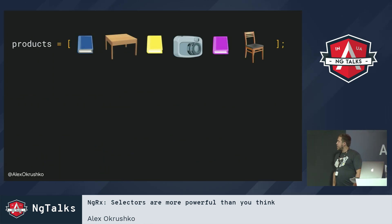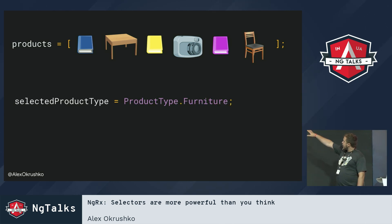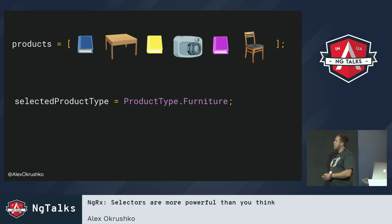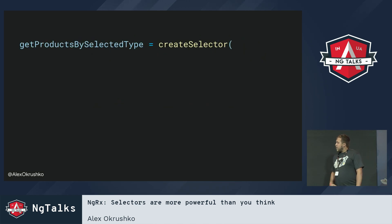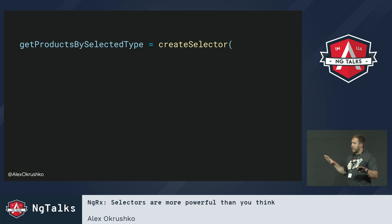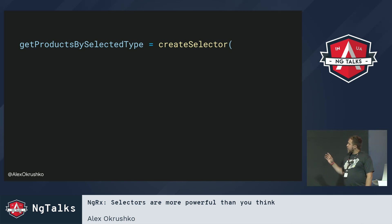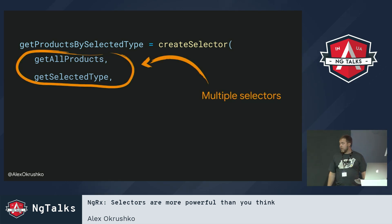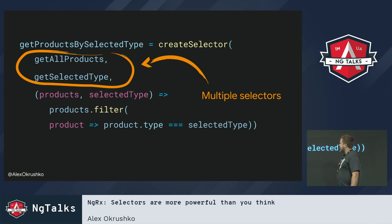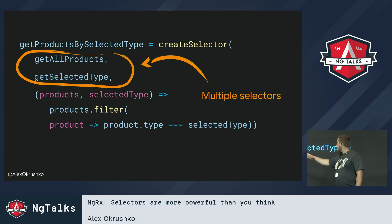Say we have an array of products — all different types: books, furniture, gadgets — and some kind of filter for the current selected product type, say furniture. Those two pieces of state could be placed in different parts of the store. What we can do is combine them. createSelector allows us to do it: we get all products from one selector, we get selected type from another part, and we combine multiple selectors into one, take the results they provide, and do something with them — in this case, filter those products by the selected type.